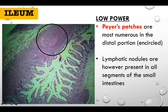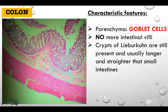Peyer's patches are most numerous in the distal ileum. In the colon or large intestine, there are no more intestinal villi. The crypts of Lieberkühn are still present but longer and straighter than in the small intestine. The parenchyma of the colon are the goblet cells, which are very numerous. There are no more Paneth cells in the large intestine.